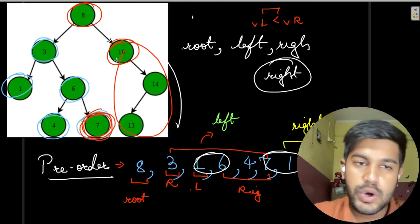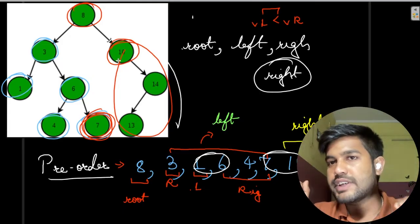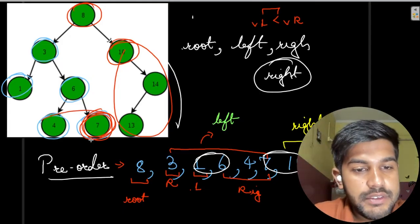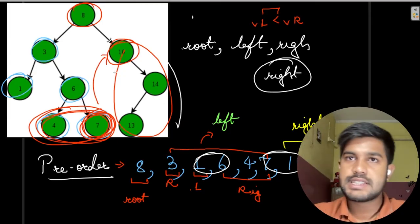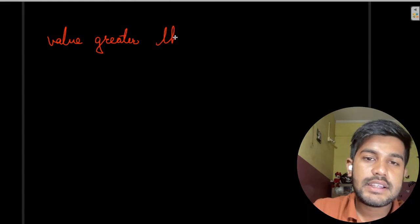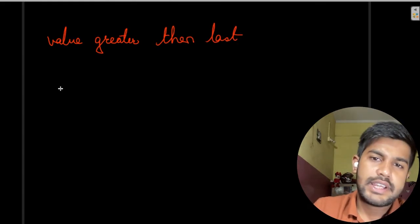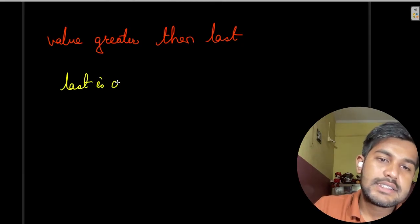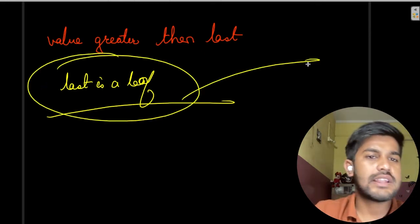We are completing the whole left-hand side first, then only completing the right-hand side. The values visited at the end are the leaf nodes. So we can safely say that whenever we receive a value that is greater than the last element, then we can safely say that the last element is a leaf node.